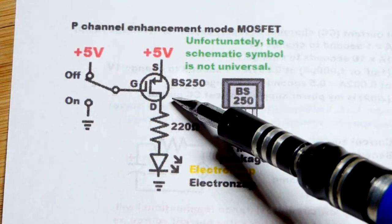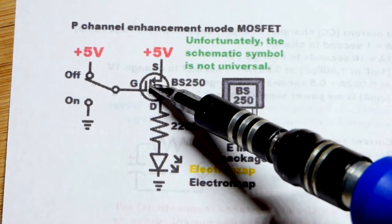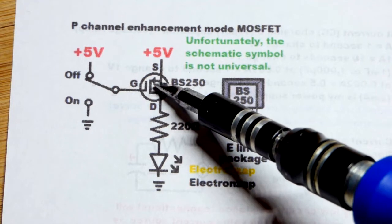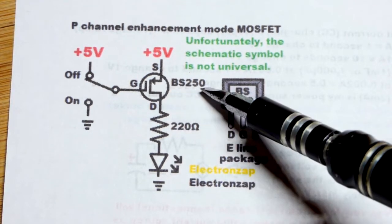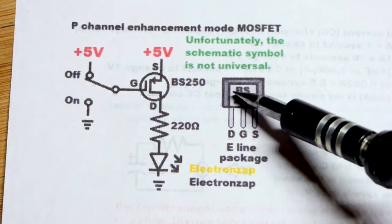But this is one that I like. The arrow now is pointing the opposite direction of the N-channel enhancement mode MOSFET. Hopefully you got the part number. I forgot to mention I was using the BS250.